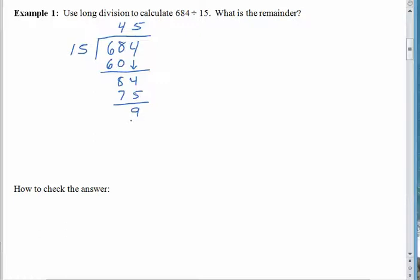And then we subtract and the result is 9. Whenever we do that subtraction, we should always end up with a result that is less than the divisor. So in this case, the 9 is our remainder. If we had 684 things, and we were trying to make groups that had 15 things in each one, we could make 45 of those groups. But then we would also have 9 things left over.